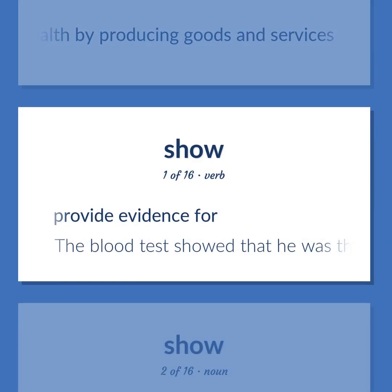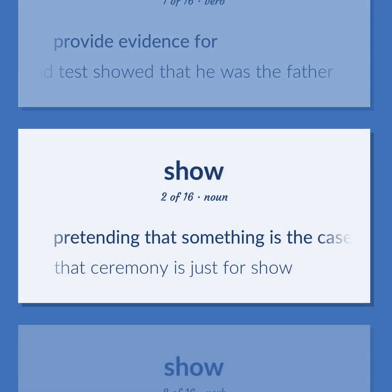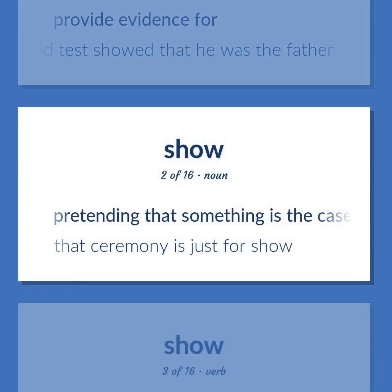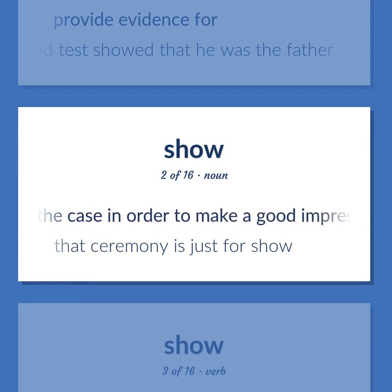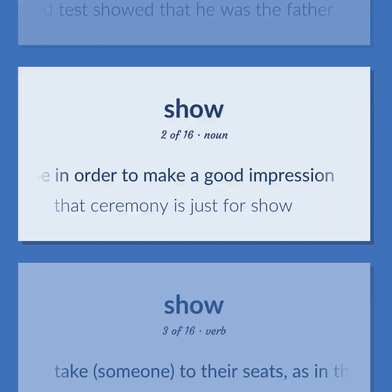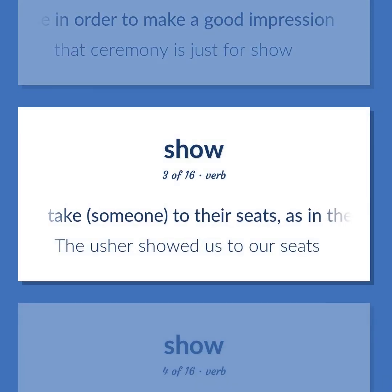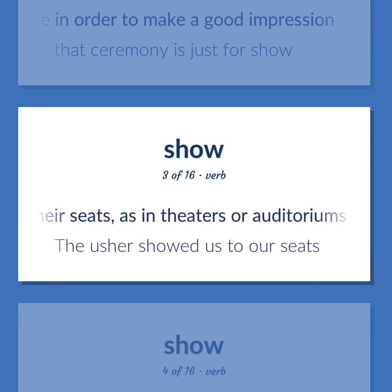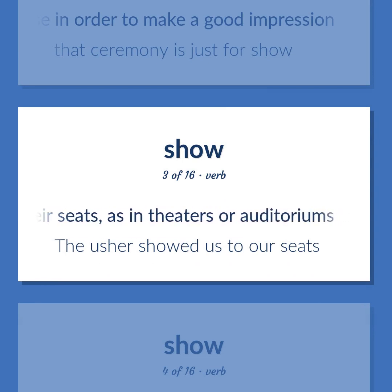Show (verb): Provide evidence for. Example: The blood test showed that he was the father. Pretending that something is the case in order to make a good impression. Example: That ceremony is just for show. Take someone to their seats, as in theaters or auditoriums. Example: The usher showed us to our seats.